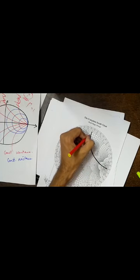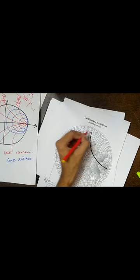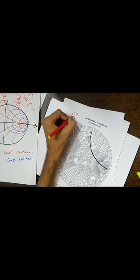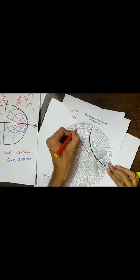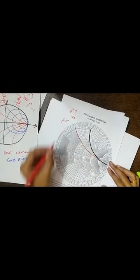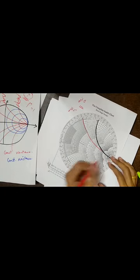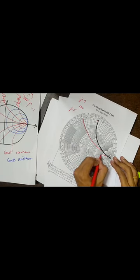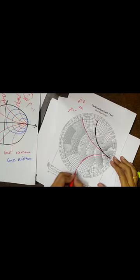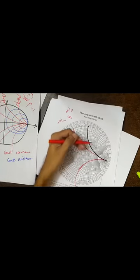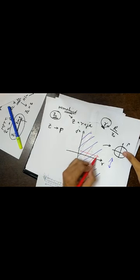For constant reactance circles: going along an arc, if the value shown is 1, this represents j1.0. Similarly another arc shows 0.5, representing j0.5. Going downward into the lower half of the Smith chart gives negative reactance values — for example, the arc intersecting at 1 in the lower half is minus j1.0. The upper half is positive reactance and the lower half is negative, because reactance can be both positive and negative while resistance is always positive.